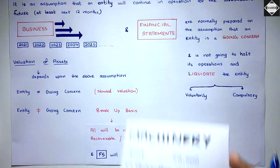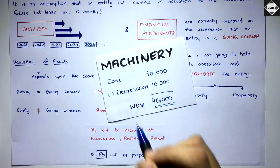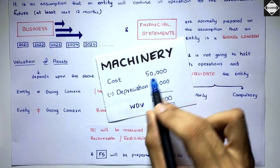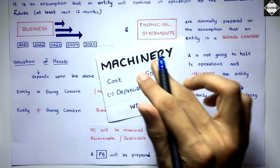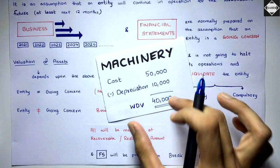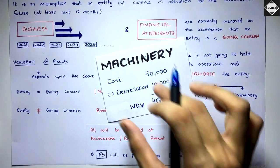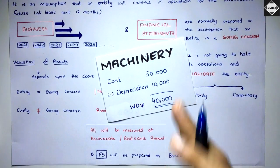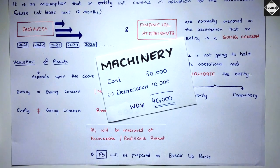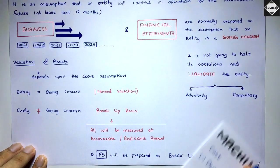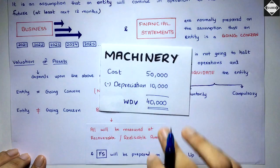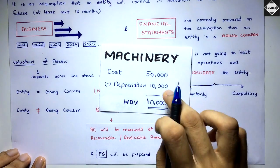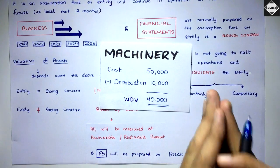For example, if the entity was a going concern and had a machinery asset with a cost of 50,000 and depreciation of 10,000 for the year, you would record that machinery at 40,000 — that's the carrying value or written-down value on a historical basis. But if the business is going to be closed down and the financial statements are prepared on a breakup basis, you cannot record the machinery at that value, because that's not the true value anymore.